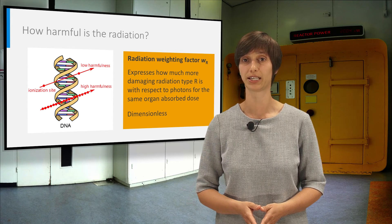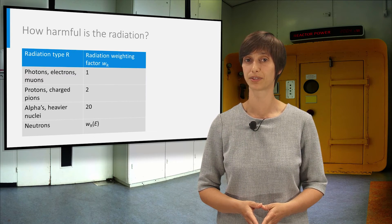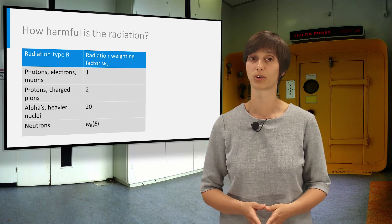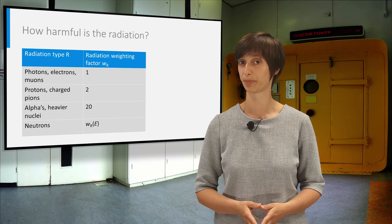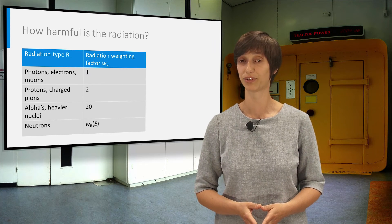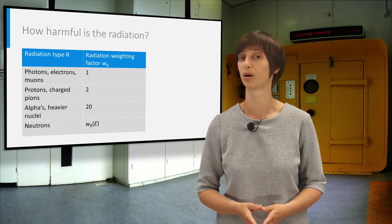This quantity expresses how much more damaging a radiation type is in comparison to photons for the same organ-absorbed doses. It is a dimensionless number. As you can see in the table on the left, electrons and muons have the same weighing factor as photons. Protons and charged ions are two times more harmful. Alphas and heavier nuclei even are 20 times more harmful.